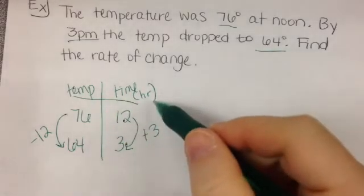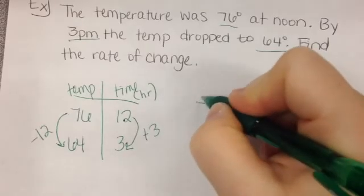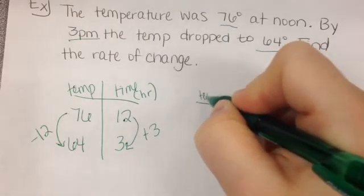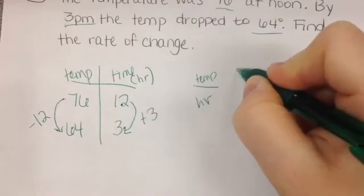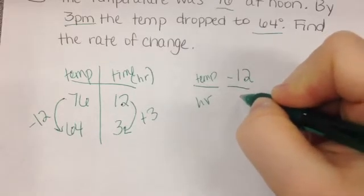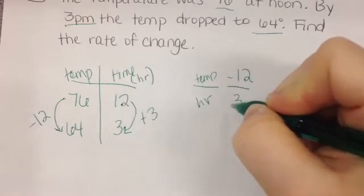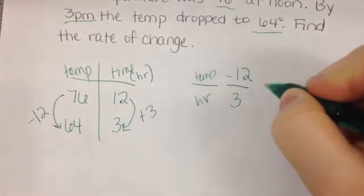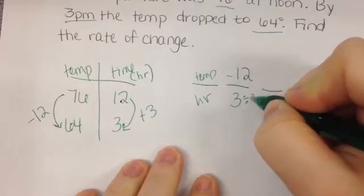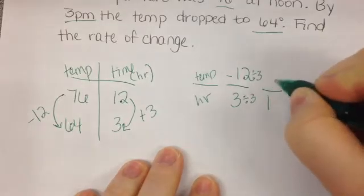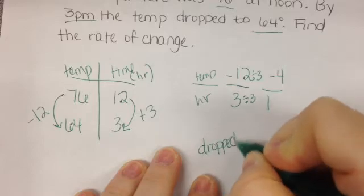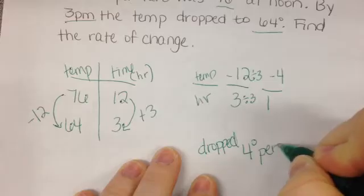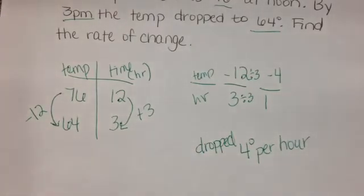Now, do I want degrees per hour or hours per degree when I set this up? Degrees or temp per hour. And we're finding rate of change. So, how did the temperature change? Changed by 12 or dropped by 12. And how did the hours change? By 3. Find your unit rate. And what did you get? Negative 4 or it dropped. That's all the negative means. It dropped 4 degrees per hour. Make sure you have your label on there. Dropped 4 degrees per hour. Nice job.